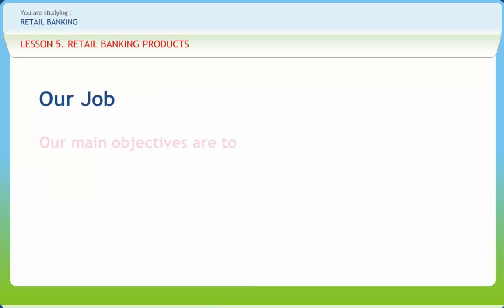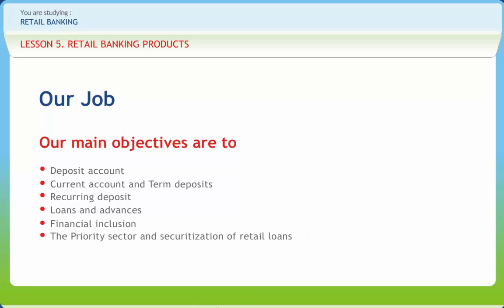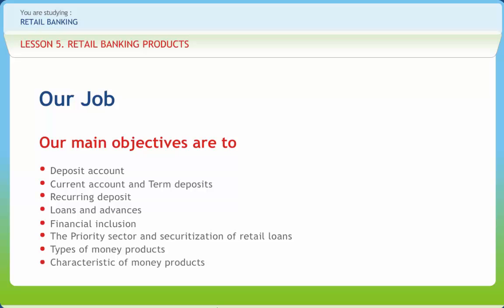After going through this presentation, you should be able to explain Deposit Account, Current Account and Term Deposits, Recurring Deposit, Loans and Advances, Financial Inclusion, Priority Sector and Securitization of Retail Loans, Types of Money Products, Characteristics of Money Products and Concept of Product Management.